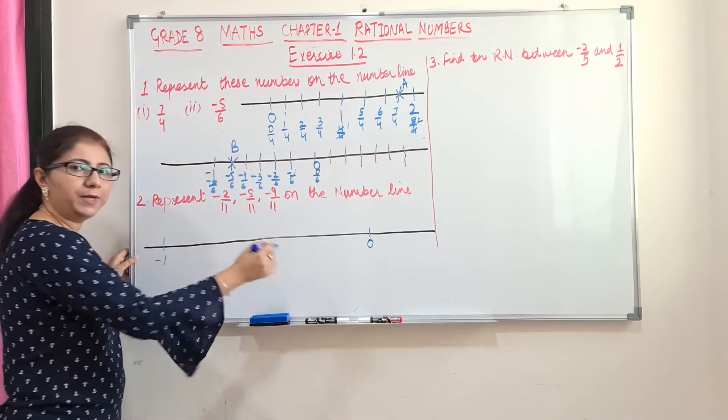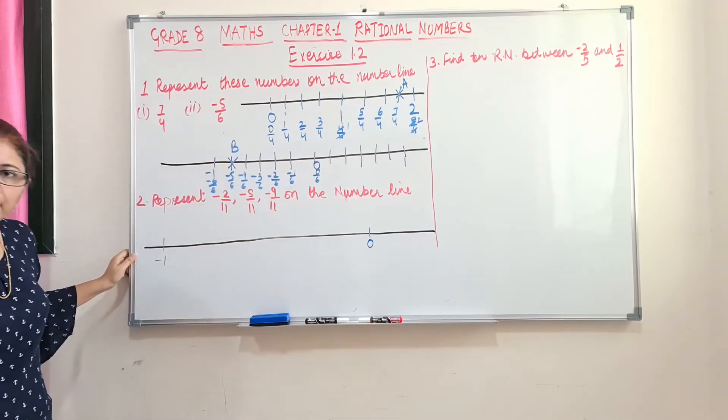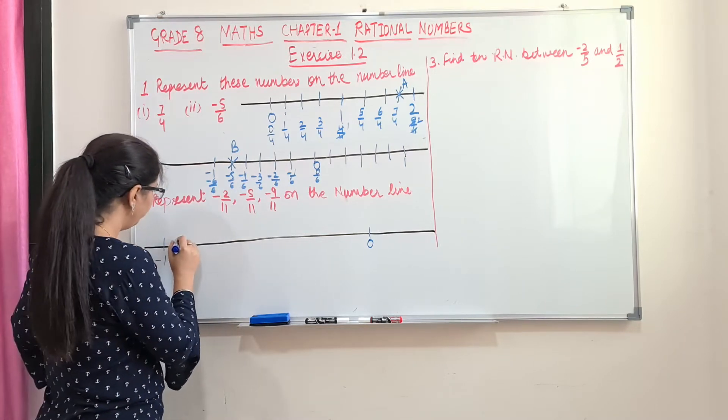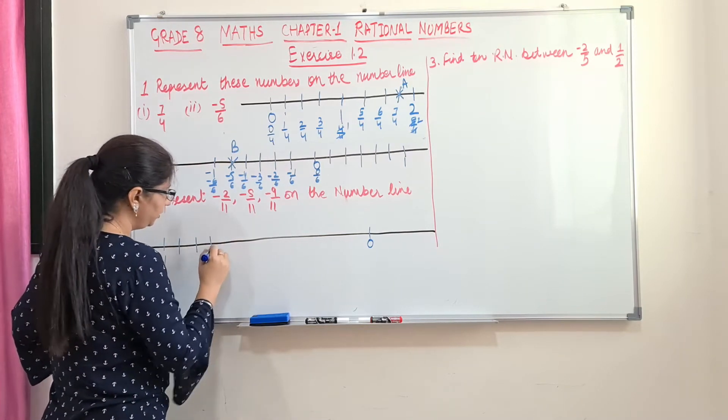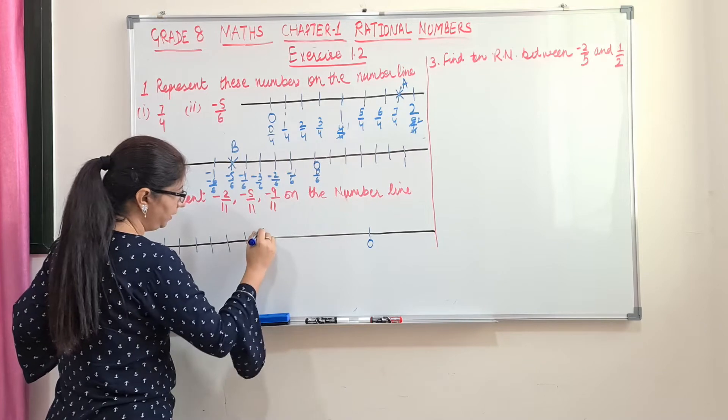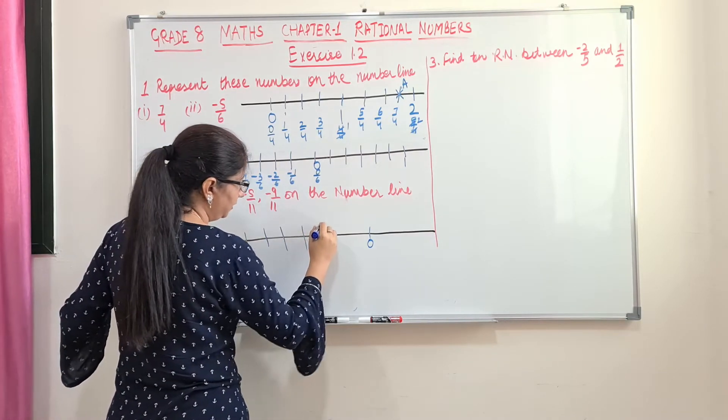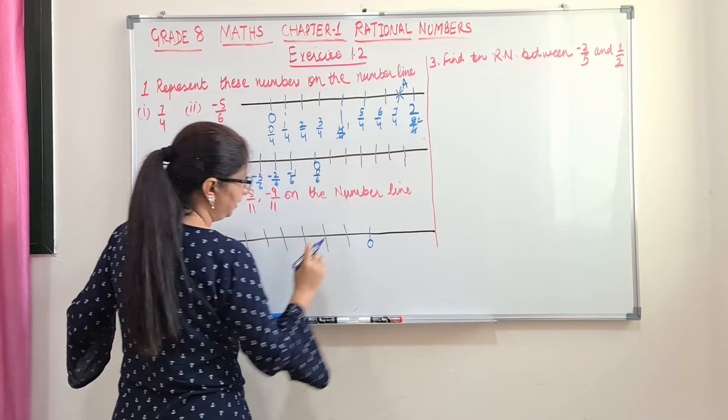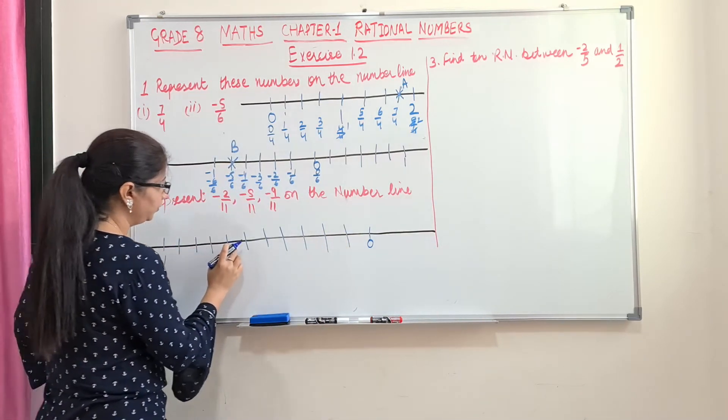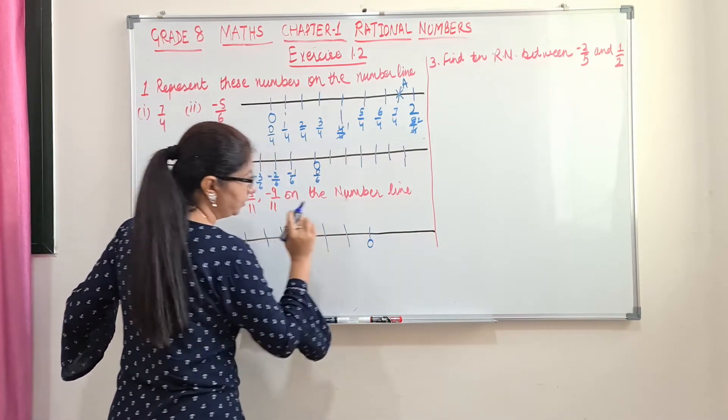So this space is to be divided into 11 equal parts. So I will have 1, 2, 3, 4, 5, 6, 7, 8, 9, 10 and 11. Let's check. 1, 2, 3, 4, 5, 6, 7, 8, 9, 10 and 11.